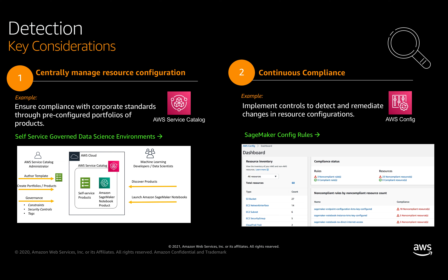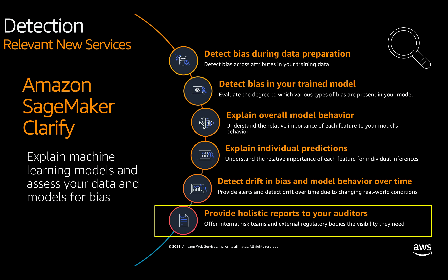Let's move on to some of the new reInvent announcements that apply to the category of detection. First, we have Amazon SageMaker Clarify, released at reInvent, developed to provide machine learning developers greater visibility into their training data and models so they can identify and limit bias and explain predictions. Clarify detects potential bias during data preparation, after model training, and in deployed models by examining attributes you specify. For instance, you can check for bias related to age in your dataset or trained model and receive detailed reports quantifying different types of possible bias.